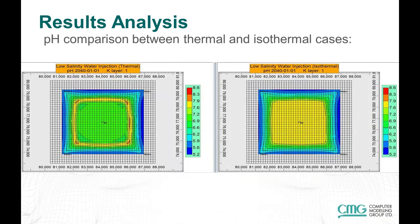Looking at pH between thermal and isothermal cases — the plot on the left is the low salinity case and the one on the right is the isothermal. We see quite a large difference in the pH behavior.